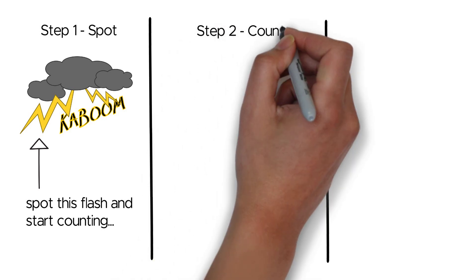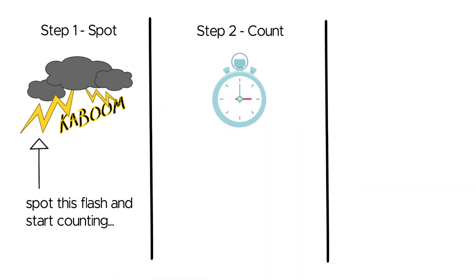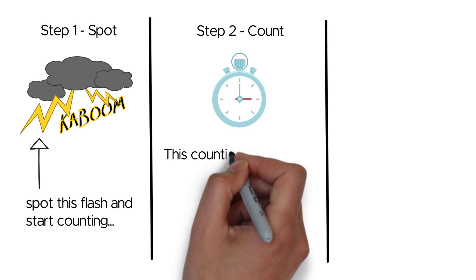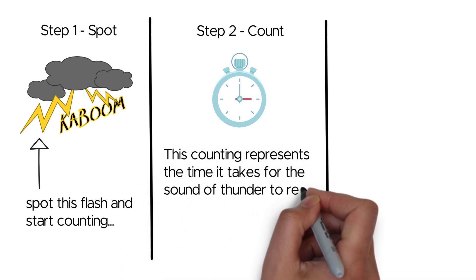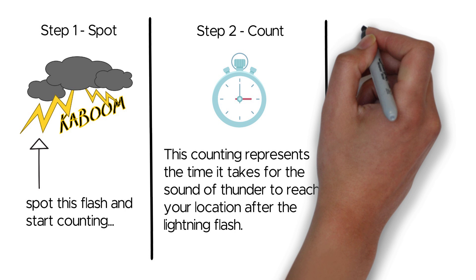As soon as you see the lightning flash, start counting seconds. Use a watch or count 1 second, 2 seconds, 3 seconds and so on. This counting represents the time it takes for the sound of thunder to reach your location after the lightning flash.